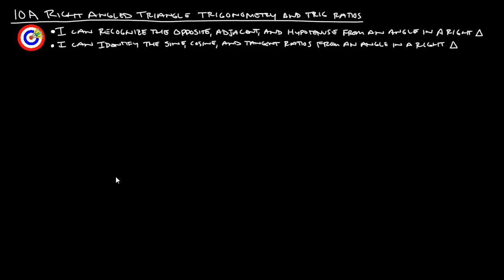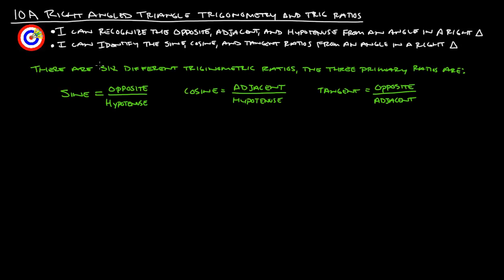Now let's look at our ratios. There are six different trig ratios, and the three we're going to deal with in this class are sine, cosine, and tangent — these are the three primary ones. The sine ratio is the opposite side divided by the hypotenuse, cosine is the adjacent over the hypotenuse, and tangent is opposite over adjacent.